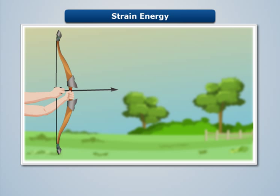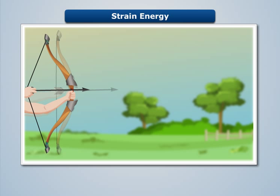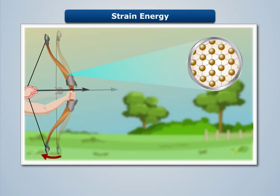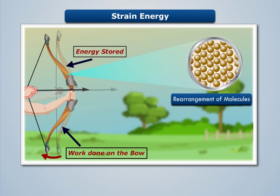Now, to shoot a target, we pull the string, due to which the bow bends. This means that while pulling the string, some work is being done on the bow, due to which the molecules of the bow material get rearranged and store some energy. This stored energy is known as strain energy.